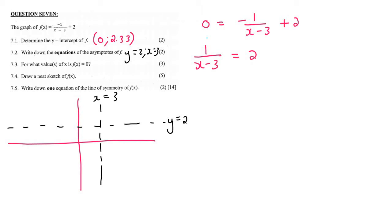Now we need a common denominator. We're going to multiply this part up, and that will give us 1 = 2(x-3). Then 1 = 2x - 6. If you bring the minus 6 over, you get 7 = 2x, and then x = 7/2, which is 3.5.